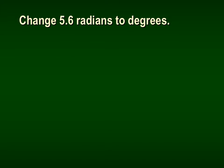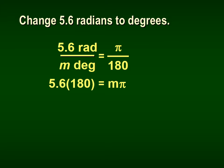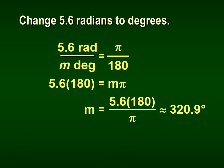Let's change 5.6 radians to degrees. We put 5.6 where M is and cross-multiply: 5.6 times 180 equals M times π. Solving for M, we multiply 5.6 by 180 and divide by π, and we get approximately 320.9 degrees.